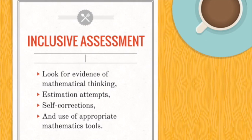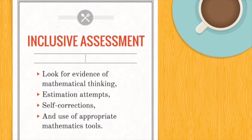In terms of inclusive assessment for dyscalculic students — and indeed all students — it is important for a teacher to look for evidence of mathematical thinking, estimation attempts, self-correction attempts, and signs of the use of appropriate mathematical tools such as rulers. In order to maintain student self-efficacy, graded work with positive and emerging examples of student understanding are much more inclusive than a worksheet with ticks or crosses based on right or wrong answers. Hanel suggests that a positive strategy for students with dyscalculia is self-assessment, where they can tick the ones they think are 100% correct and the teacher can let the errors and omissions tell the story.